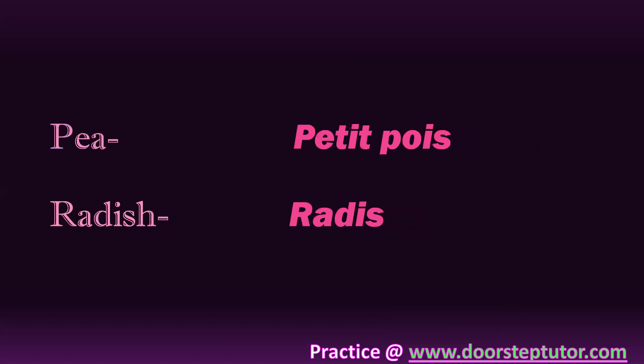Next we have pea — 'matar' in Hindi. In French, pea is 'petits pois'. 'Petit' means small in French, and you know that peas are very small seeds. So from 'petit' comes 'petits pois', which means pea.